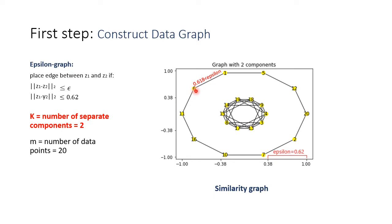So every two data points, for example this one and this one, are connected if the distance between them is lower than 0.62. So here if the distance is 0.618, it's lower than epsilon, then we connect these components.